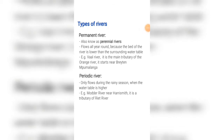A periodic river only flows during the rainy season when the water table is higher — so it only flows when the water table is higher than the river bed. Remember this only occurs during the rainy season. An example is the Modder River near Harrismith. It is a tributary of the Riet River.